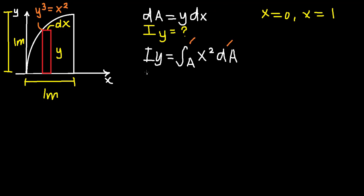Now let's plug those values in. So I_y equals the integral from 0 to 1 of x squared, and then we have our dA. Our dA is simply y dx, the multiplication, y dx.